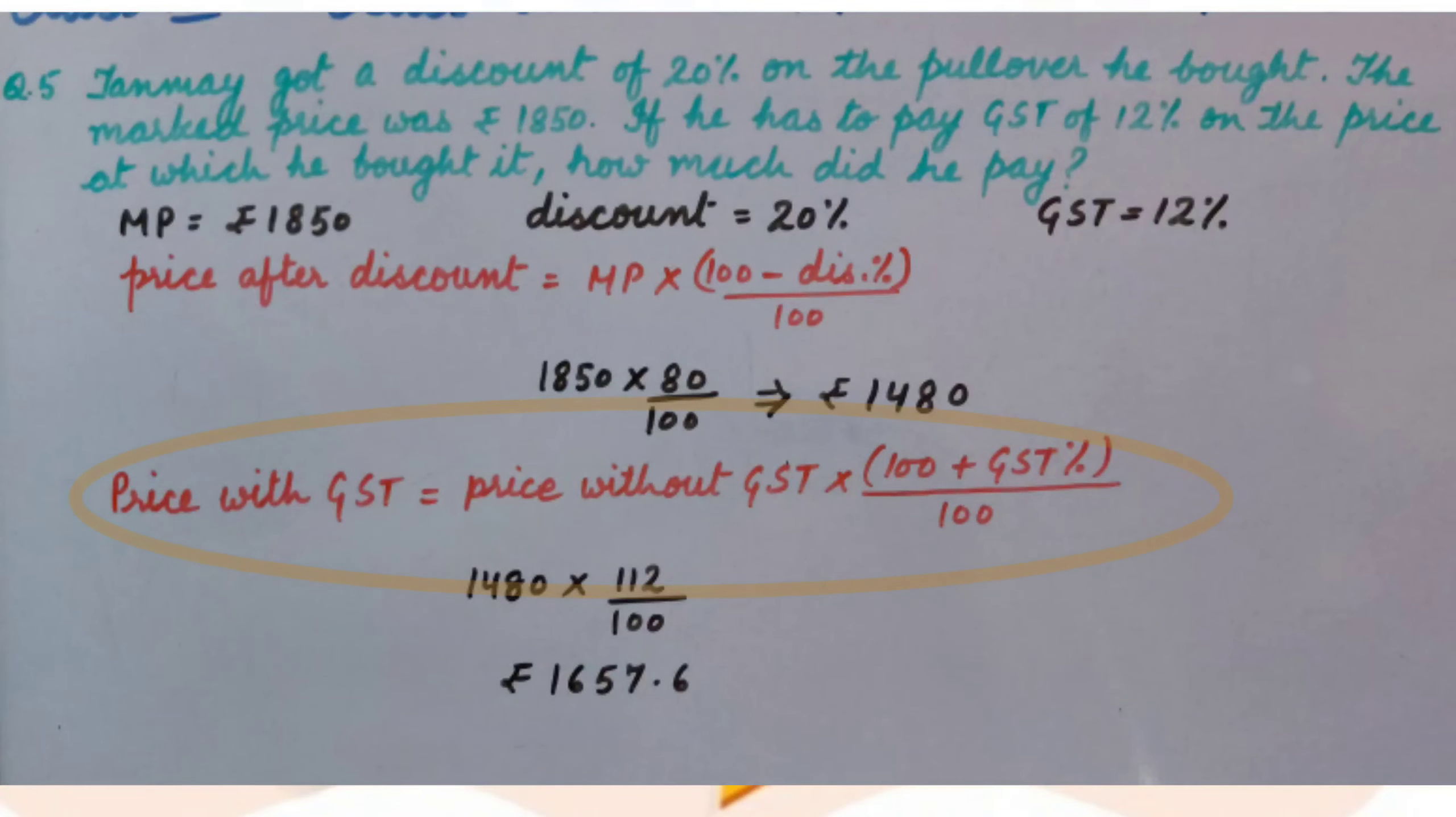As we know, price with GST is equal to price without GST multiplied by 100 plus GST percent upon 100. Inserting the values we get 1480 multiplied by 112 upon 100, that is Rs. 1657.6 he has to pay.